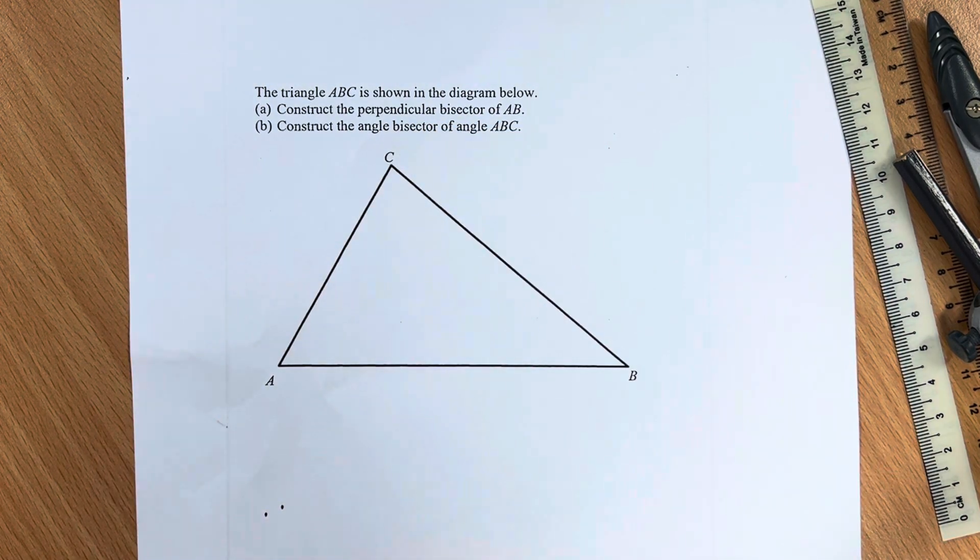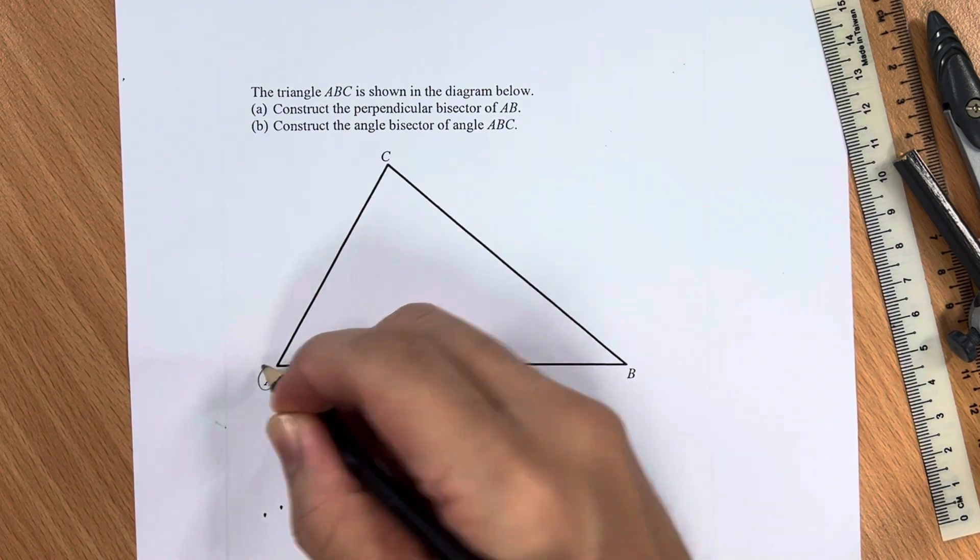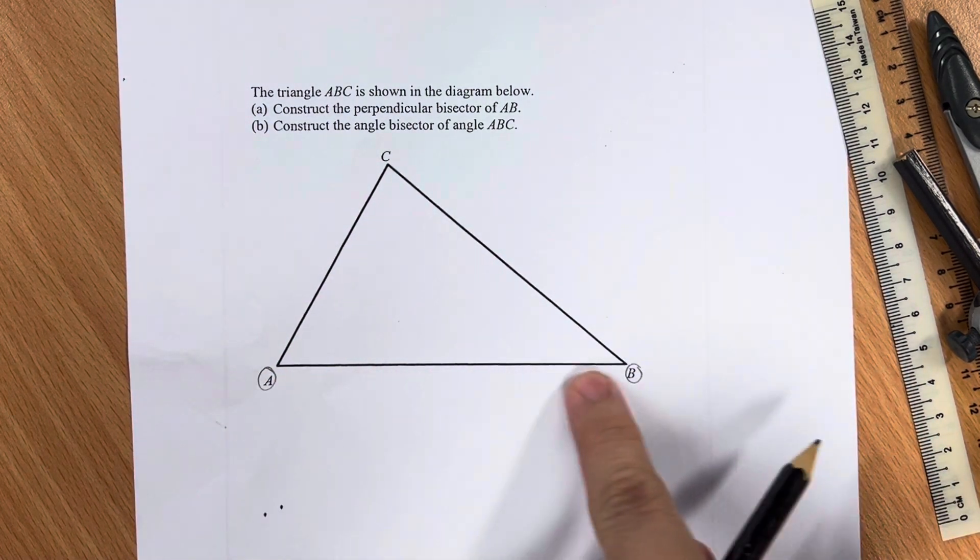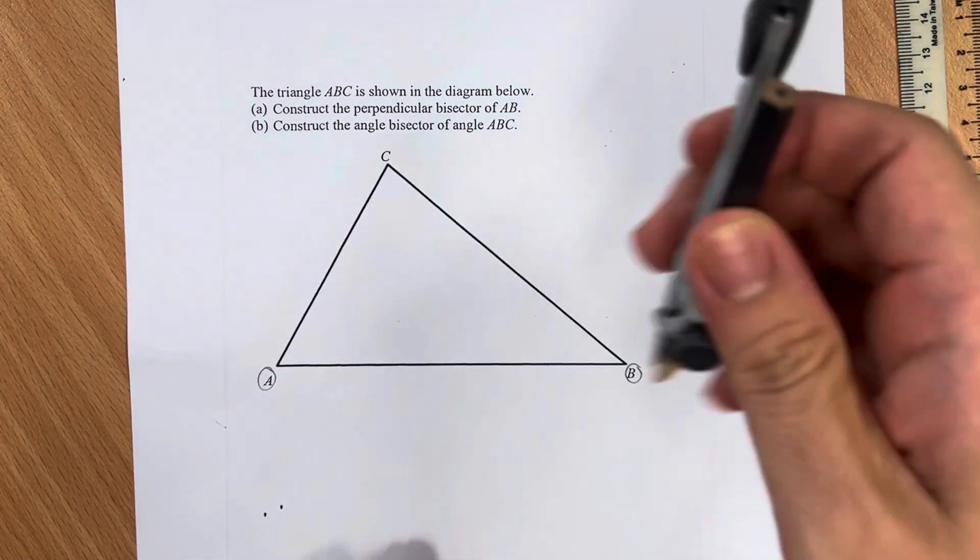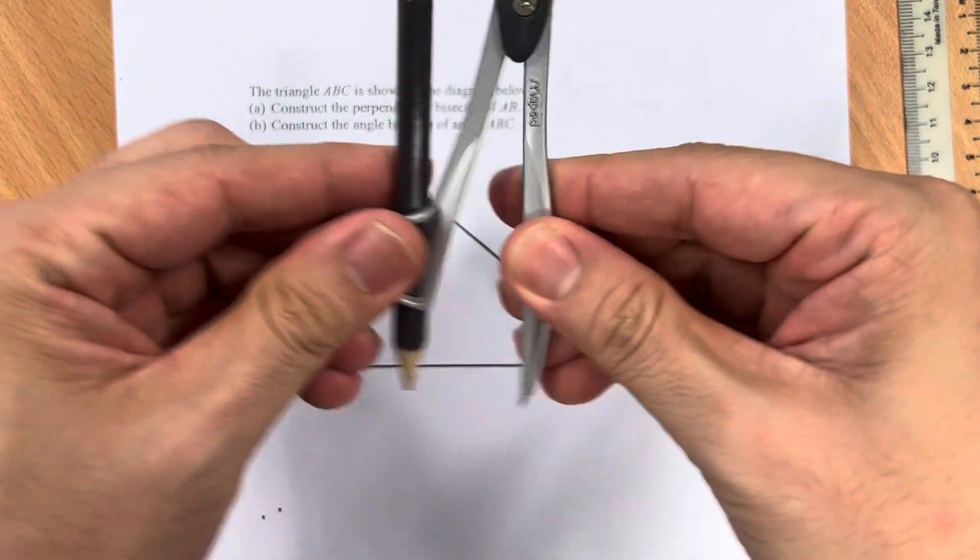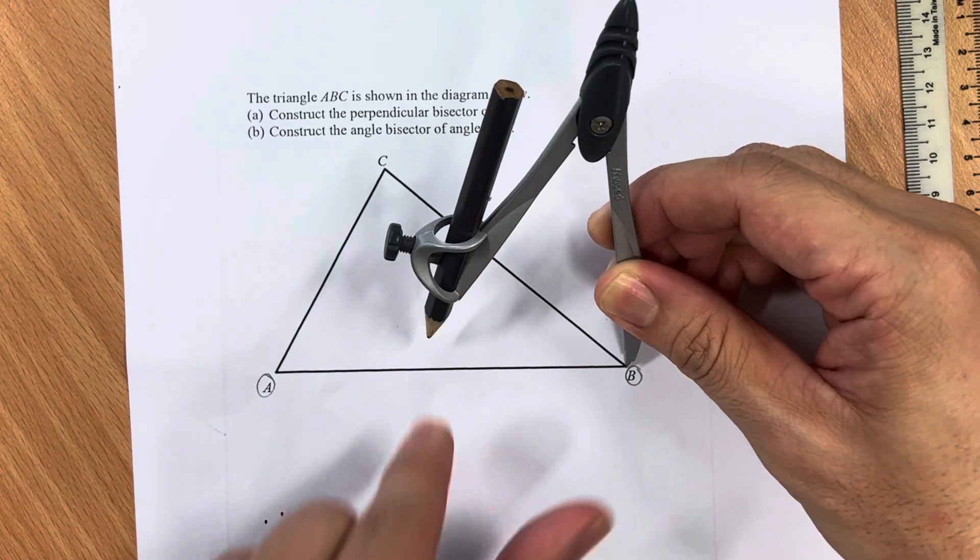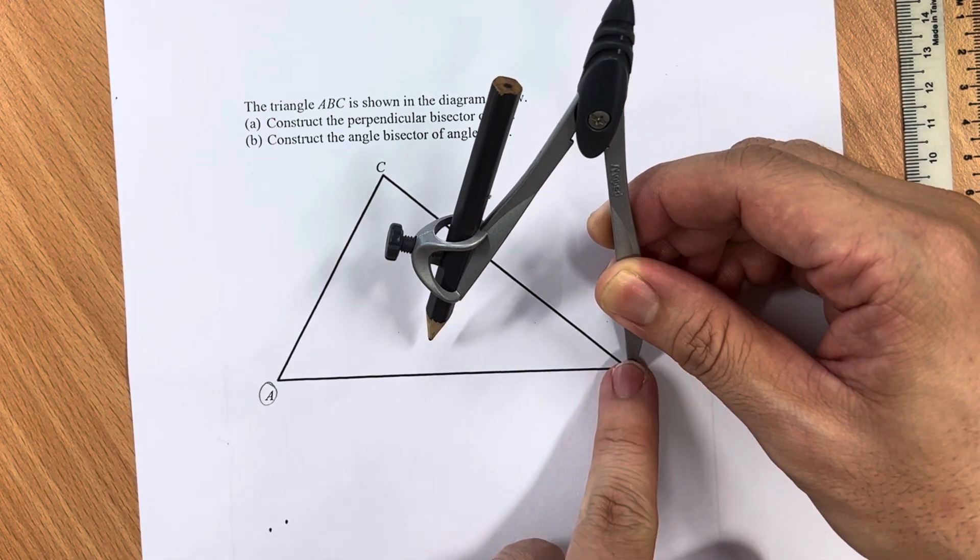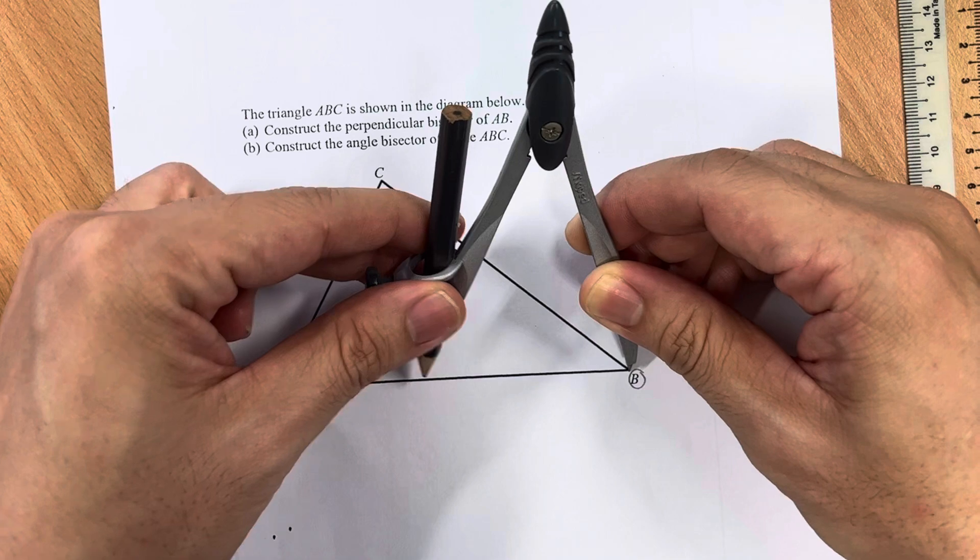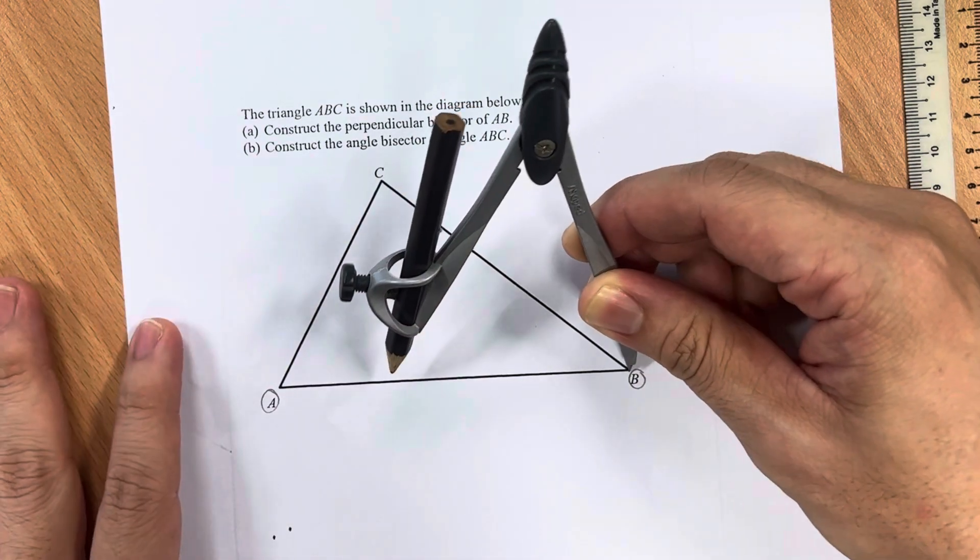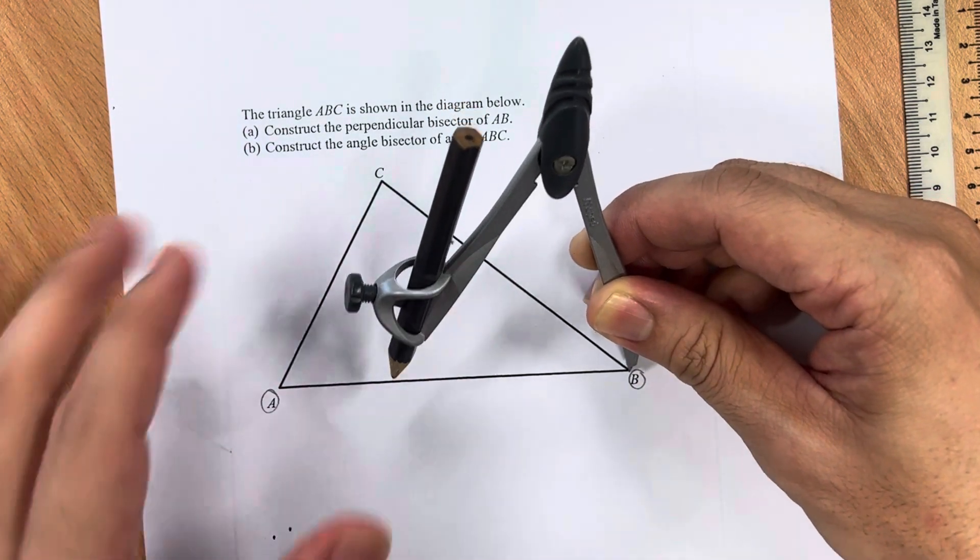AB is here, this is the line AB. So for part A, take out a compass and make sure that the length of the pencil to the pointed tip is more than half of the line AB.